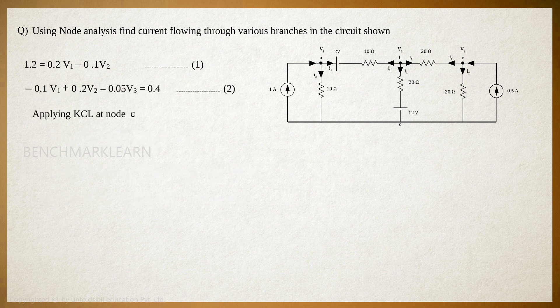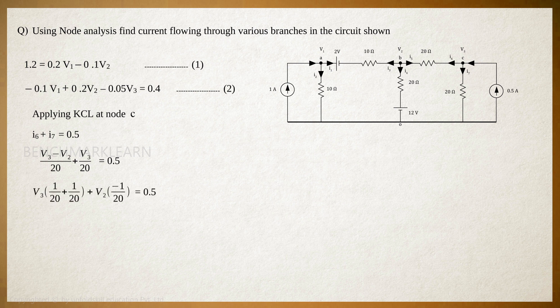Finally, apply KCL to node C. I6 plus I7 is equal to 0.5. Expressing the currents in terms of the node voltages, we get (V3 − V2)/20 + V3/20 is equal to 0.5. Or, V3 into (1/20 + 1/20) + V2 into (−1/20) is equal to 0.5. Or, 0.1V3 minus 0.05V2 is equal to 0.5. Let this be equation number 3.